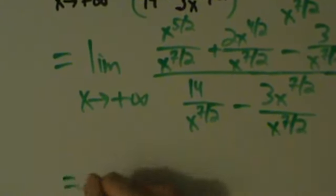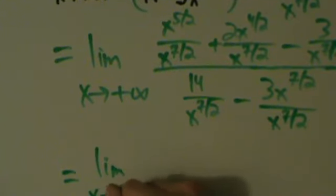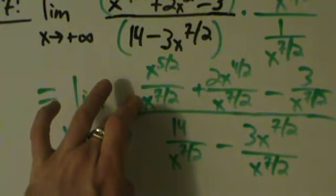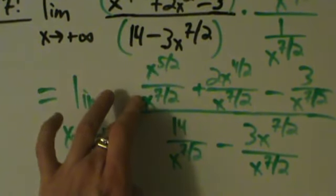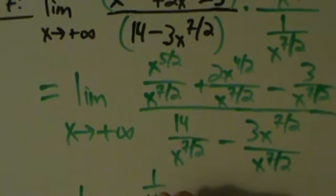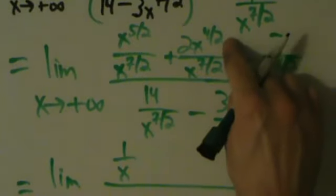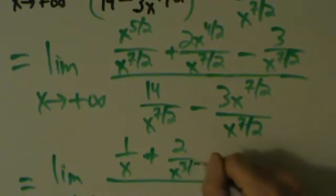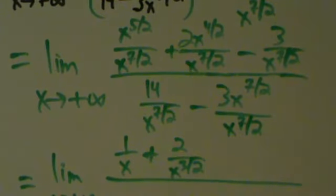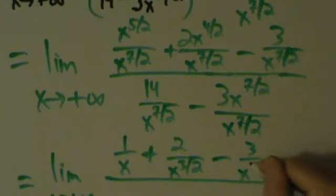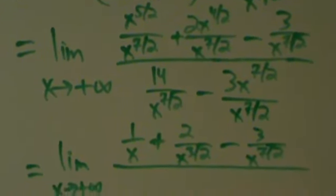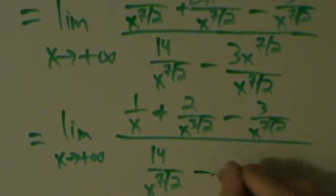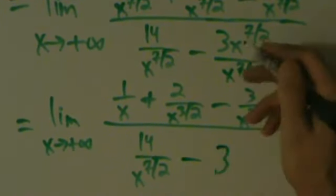Now we need to simplify. x to the 5 halves divided by x to the 7 halves simplifies to 1 divided by x to the 2 halves, which is just 1 over x. Then 2x to the 4 halves over x to the 7 halves simplifies to plus 2 over x to the 3 halves. The minus 3 over x to the 7 halves can't be simplified further. On the bottom: 14 over x to the 7 halves stays as is, and minus 3x to the 7 halves divided by x to the 7 halves just gives minus 3.